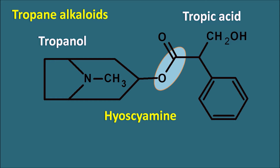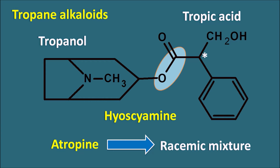Hyoscyamine is an important component of the tropane alkaloids and is optically active due to a chiral carbon. It can exist as the L (levo) and D (dextro) isomers, with the levoform being 20 times more active than the dextroform. Within plants, hyoscyamine mainly exists as L-hyoscyamine, but it can be easily racemized to produce the racemic mixture known as atropine.